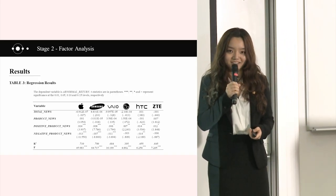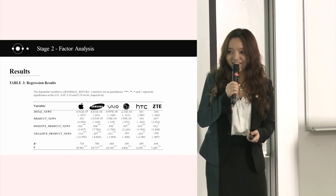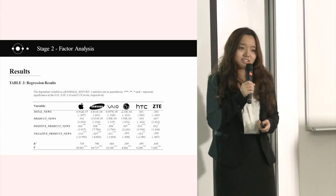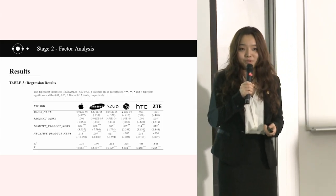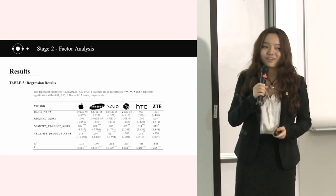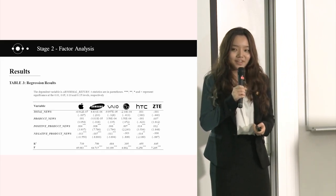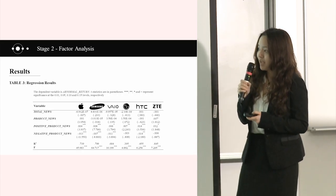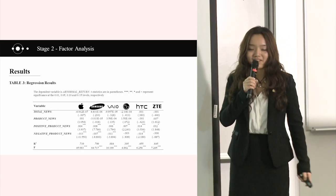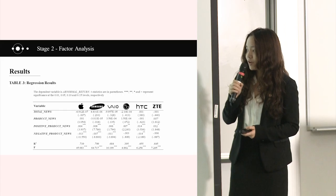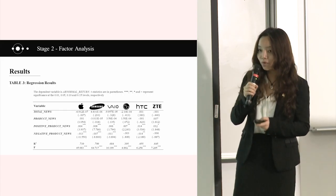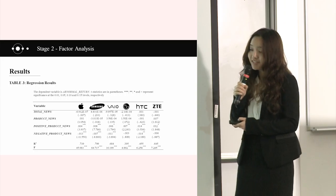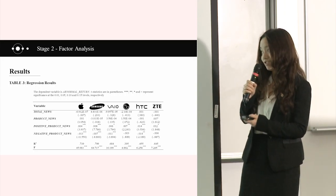After running the data on SPSS, we got the following regression results. Overall, our regression model is appropriate for the six companies. But not all four factors are significant for each company. For Apple, Samsung, and Sony, positive product news and negative product news are all significant. But for LG, HTC, and ZTE, the situation is different.